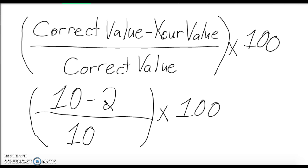So in this case, 10 minus 2 is 8. 8 over 10 becomes 0.8, times 100.